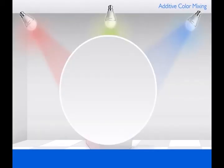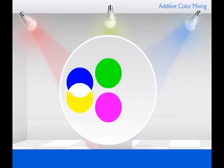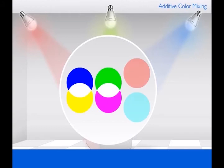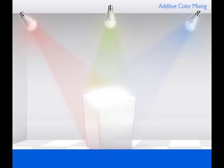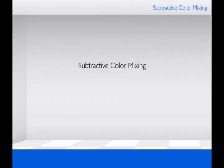The complementary color yellow mixed with the primary color blue gives white light. The complementary color magenta with primary green or the complementary color cyan with red also gives white light. Let us now understand the basic principles of subtractive color mixing.